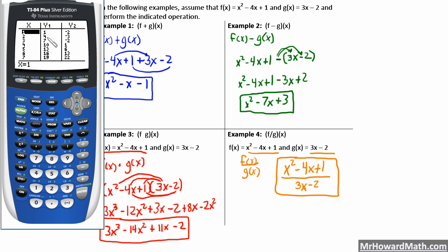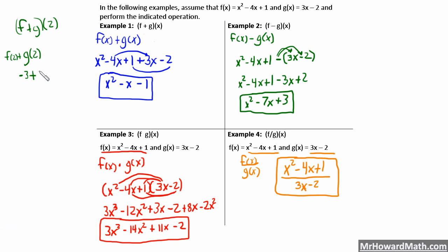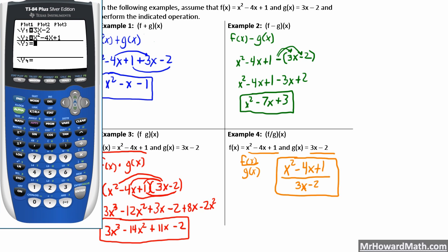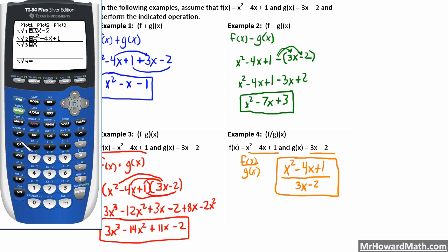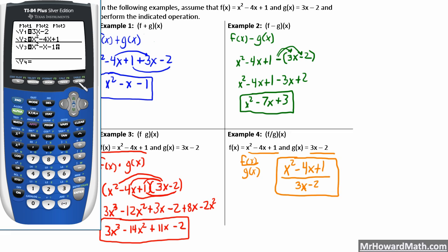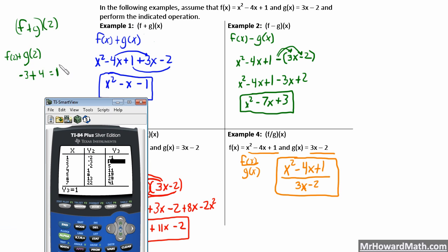So that would be negative 3 plus our g of 2 value. G of 2 was in y1, so that's plus 4. Negative 3 plus 4 equals positive 1. To make this a little faster — we found that our f plus g of x function was x squared minus x minus 1 — so we put that into y3. We go in our y3 table when x is 2, and that result is 1. Notice that's the exact same thing we got before.